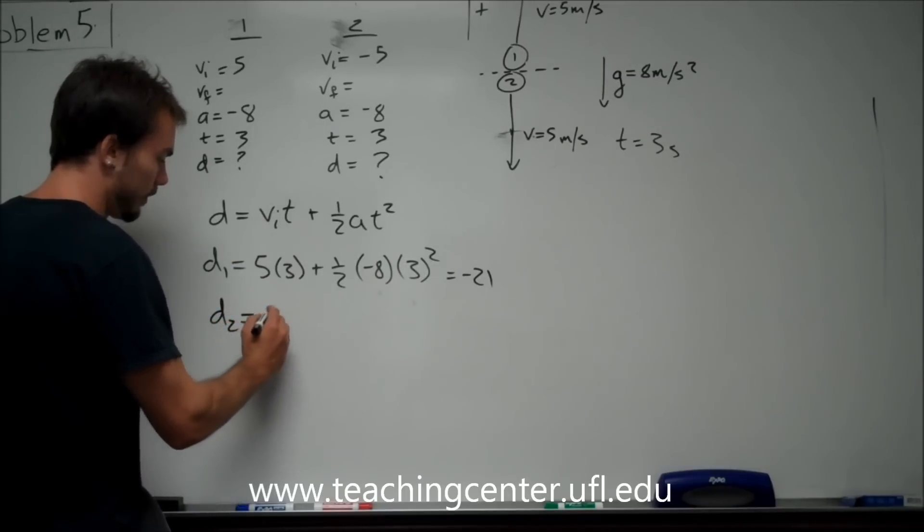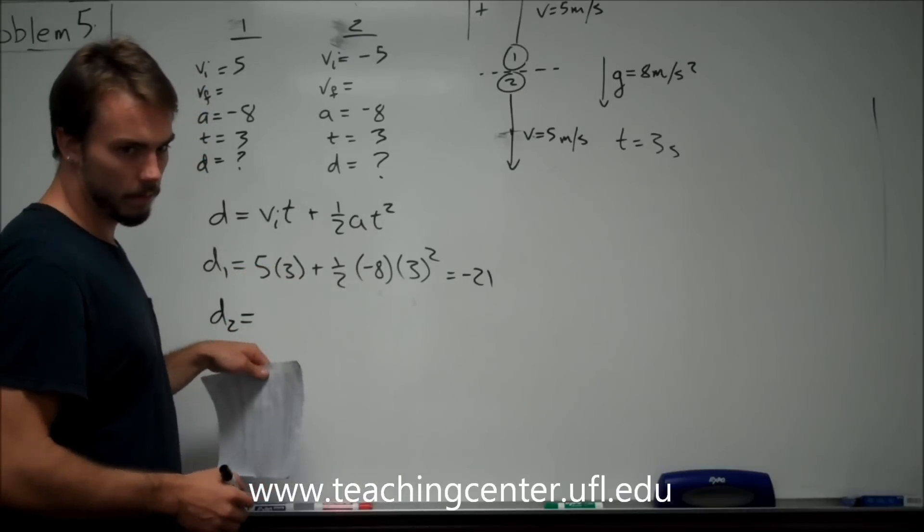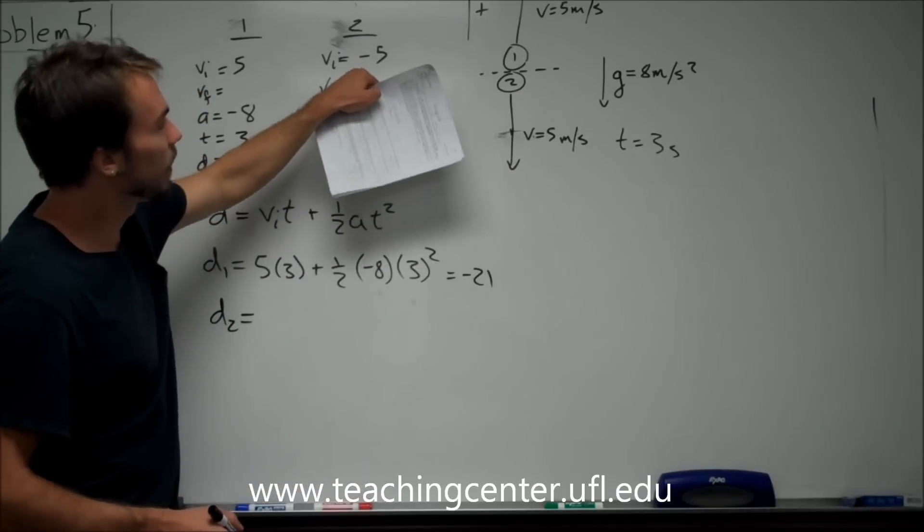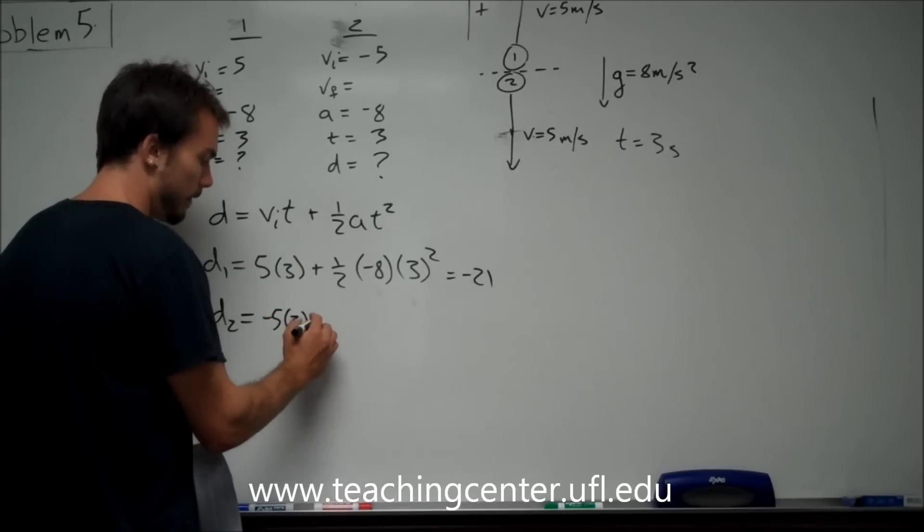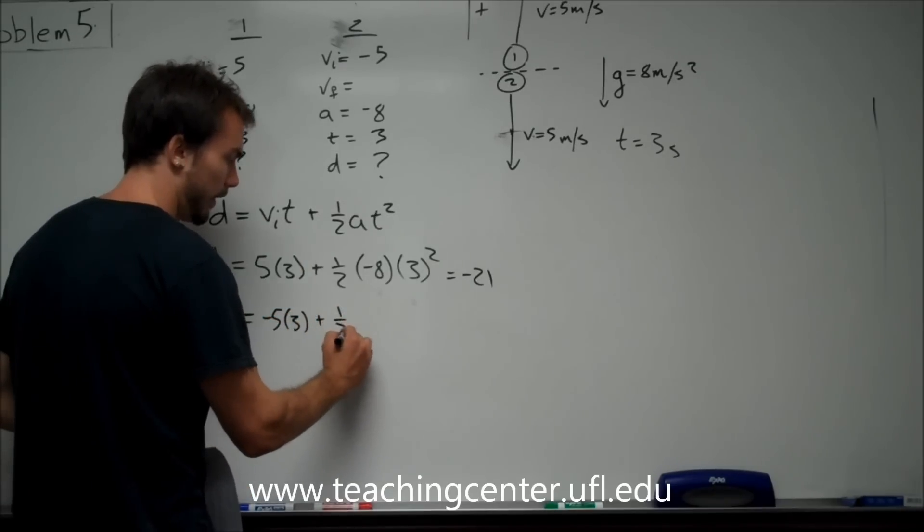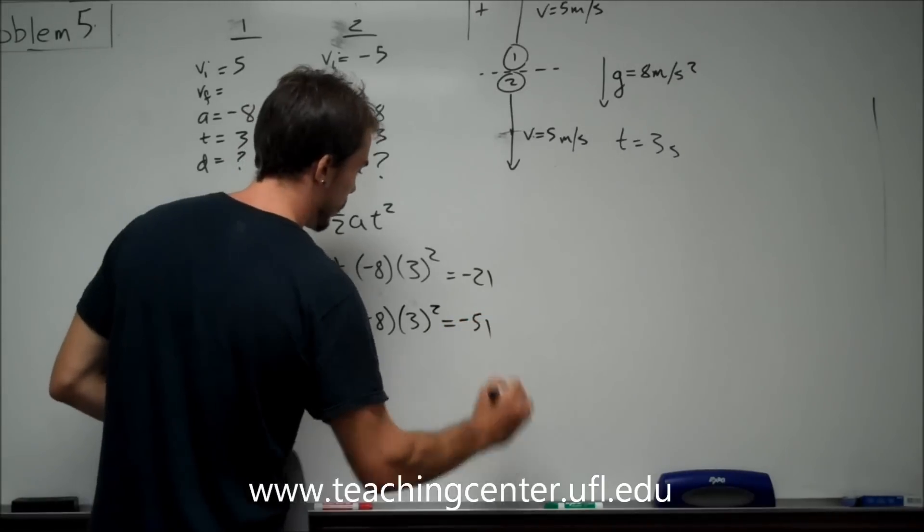The second one, D_2, same exact equation used, almost the same exact equation when you have the numbers in, except don't forget that negative right there. It's going to make all the difference in the world, otherwise you get the same answer. So, negative 5 times 3 seconds plus 1/2, negative 8, 3 squared equals negative 51.